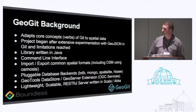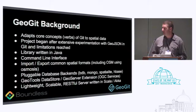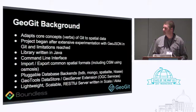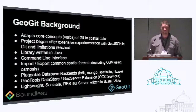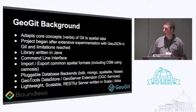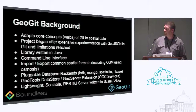We use a pluggable database backend — Berkeley database for embedded client-side stuff, BDB and SpatiaLite for embedded stuff, and Mongo, and recent work on HBase and things like Ceph for the backend. There's a GeoTools data store and a GeoServer extension, so you can get OGC services off of a GeoGit repository. We've recently been working on a lightweight, scalable, RESTful server written in Scala and Akka.